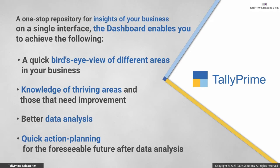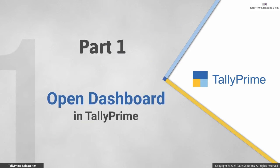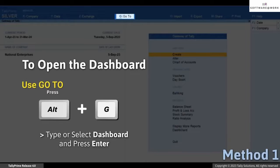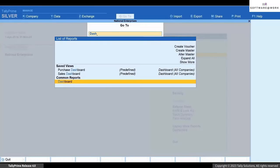You just have to skim through all the tiles of the dashboard catered to you on a single interface for your quick reference. Let's first see how to open Dashboard in TallyPrime. You can navigate to the dashboard using GoTo — press Alt+G, then type or select Dashboard and press Enter.